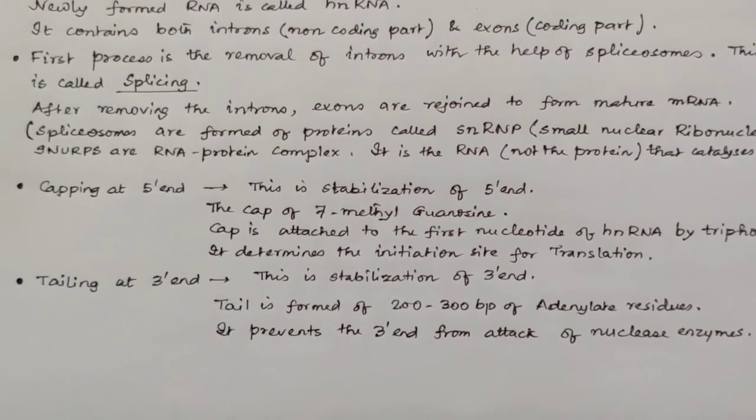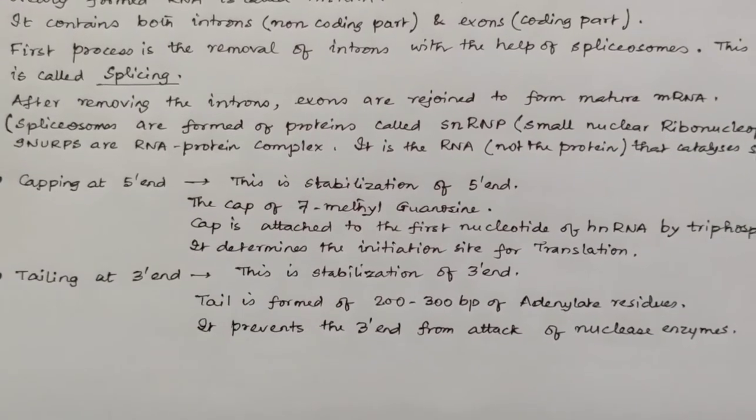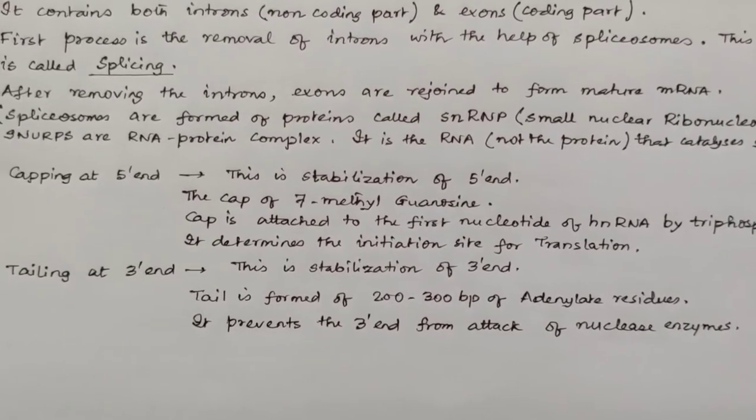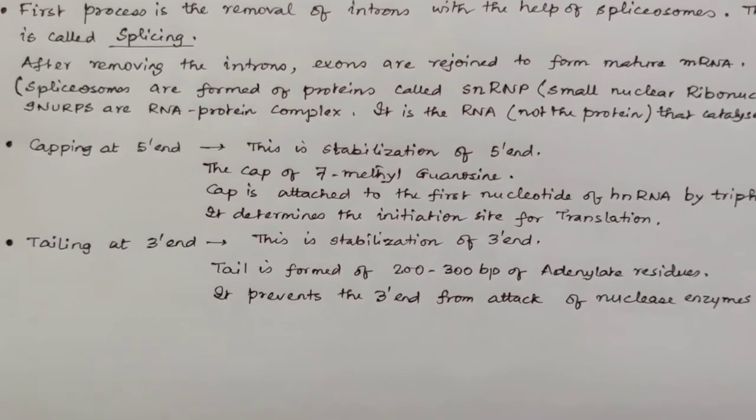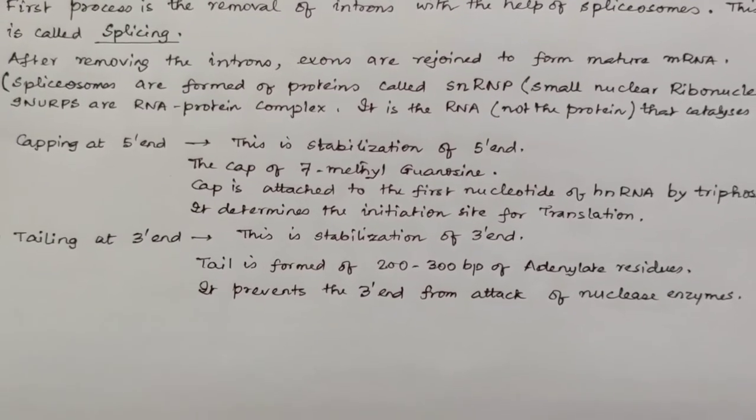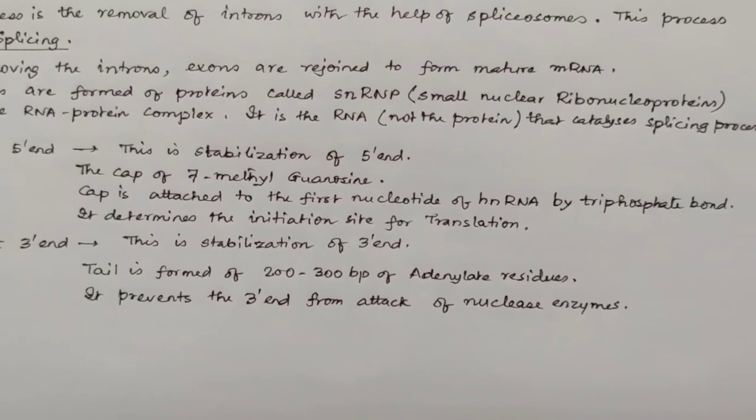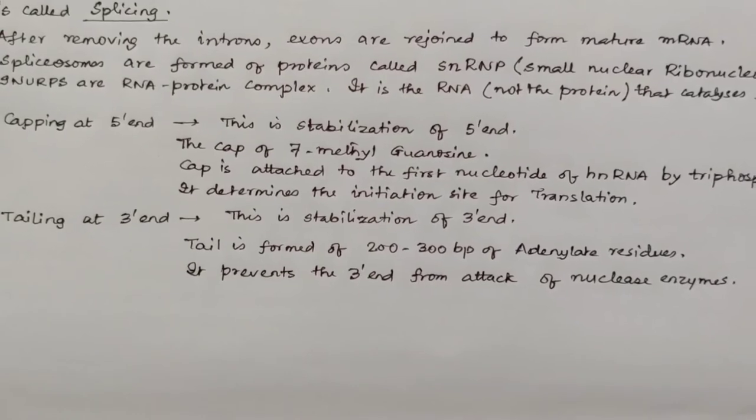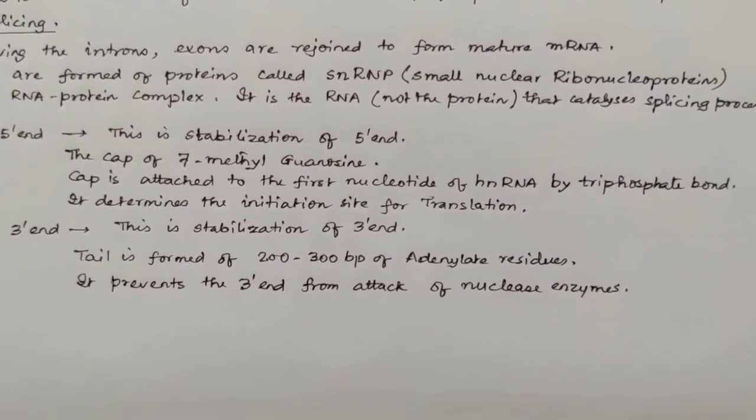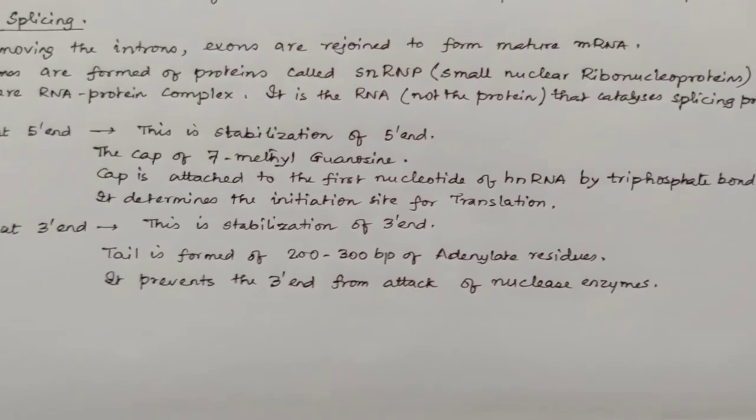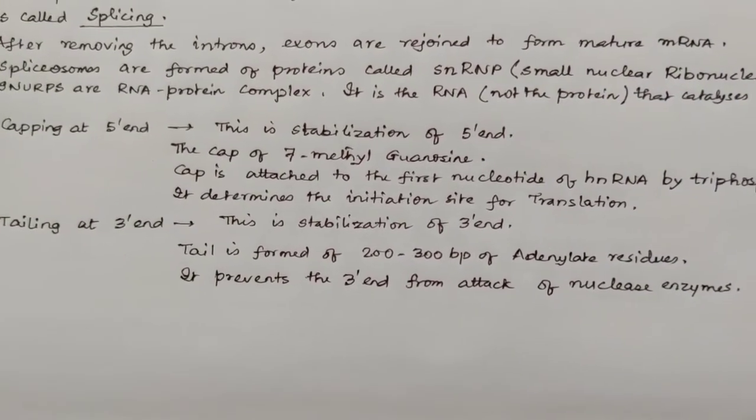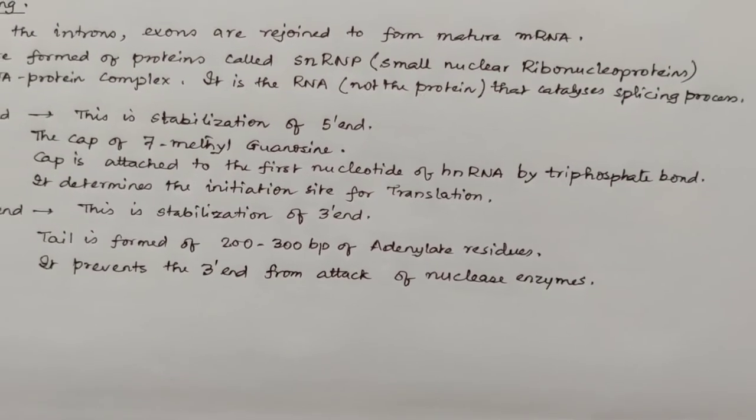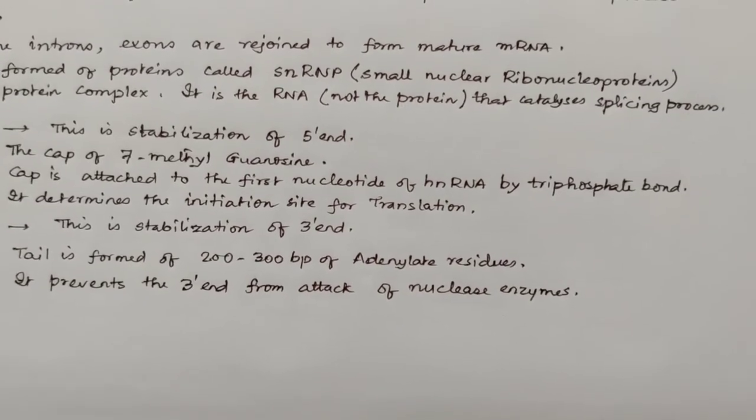You may be asking, what is a spliceosome? A spliceosome is a protein-RNA complex. After removing the introns, exons have to be rejoined to form a mature RNA. The spliceosomes are formed of proteins called snRNP, the full form is small nuclear ribonucleoproteins, which is pronounced as snurps. These are protein-RNA complexes. Actually, it is the RNA, not the protein, that catalyzes the splicing process.